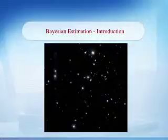Using Bayes' rule, we combine the prior and the likelihood and calculate the posterior probability distribution, which is: p(theta | x) = p(theta) * p(x | theta) / p(x).